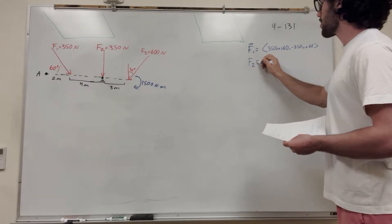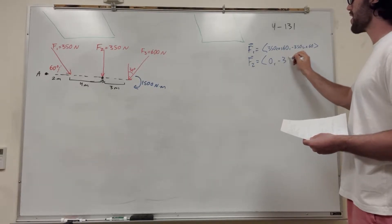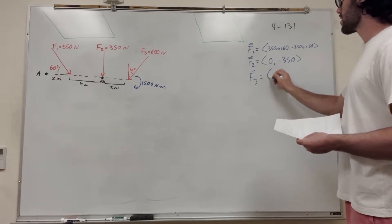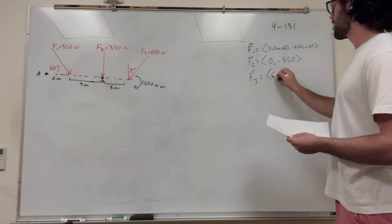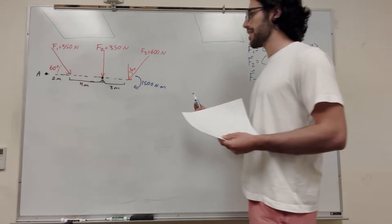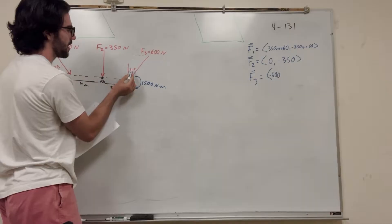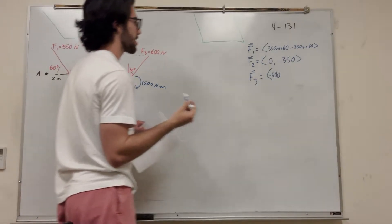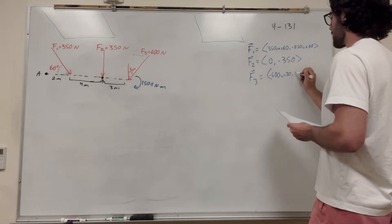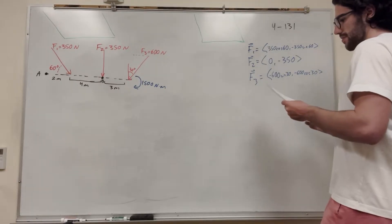Now let's do Force 2. Force 2 only acts in the y-direction, so there's no x-component — only negative 350 in y. For Force 3, it's 600 units but acting in the negative x-direction, so it's negative 600. Since the angle is 30 degrees, we use sine of 30 for the x-component. Then for the y-component, we use negative 600 times cosine of 30.